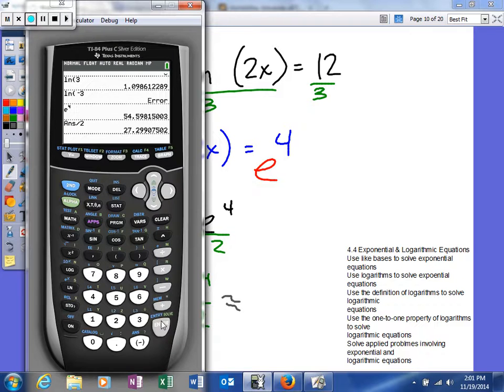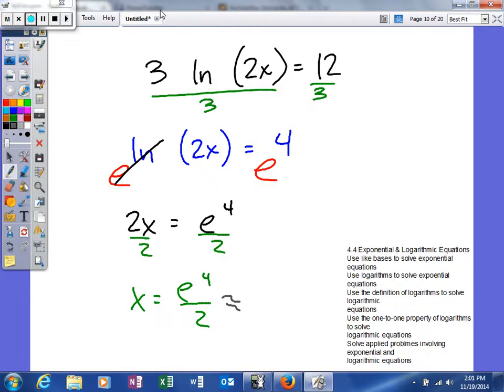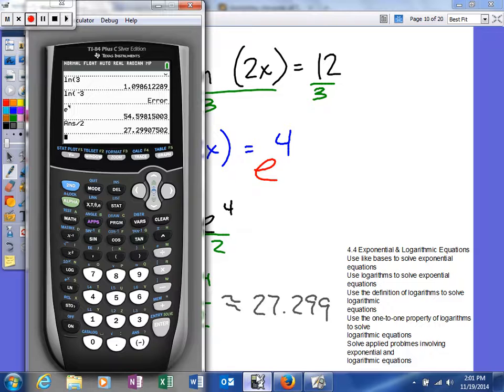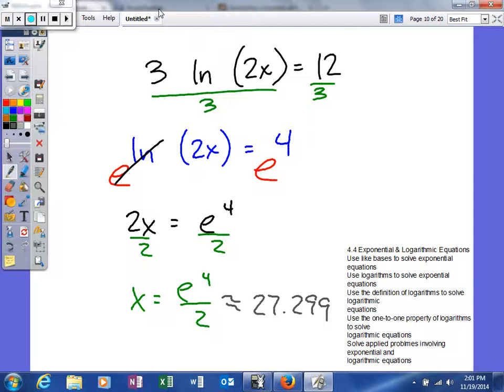So we can answer it 27 decimal 299. Did I round it right? 299. Yeah. So that's the decimal equivalent for that answer.